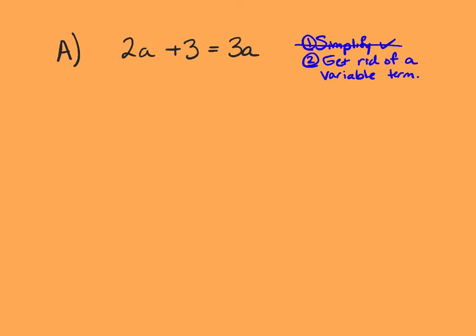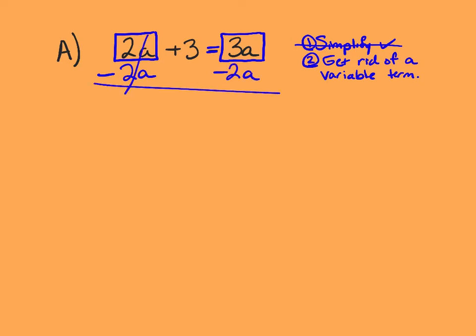What happens here is I end up with a variable term on each side of the equal sign. If this was a two-step equation, I would only have one on one side. Since there's only one term on the right side, I'm going to get rid of the term on the left — positive 2a — by subtracting 2a from both sides. So I get 3 equals 1a, which is just a. In this case, we're done. This was an unusual problem in that it was that short.